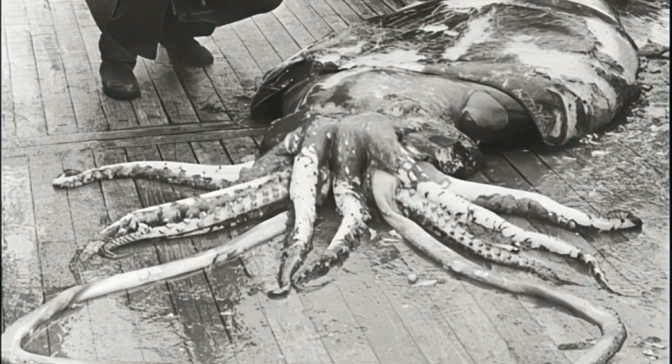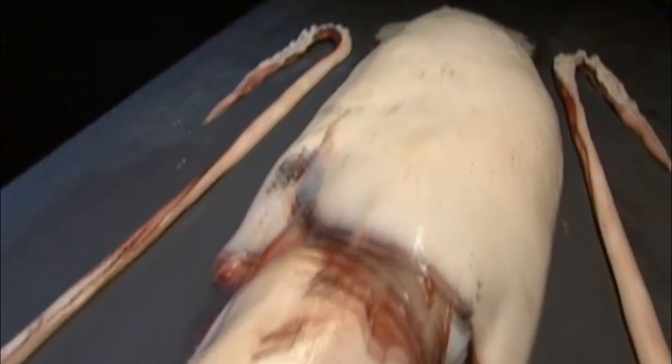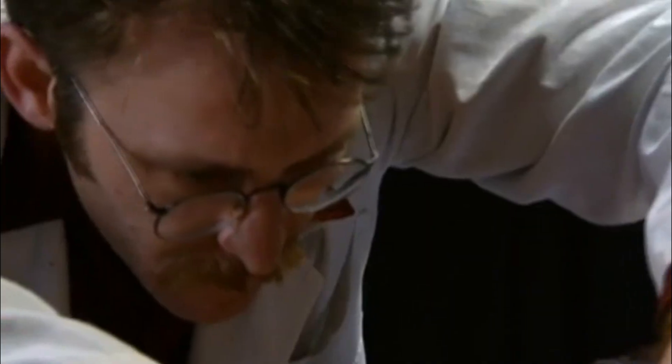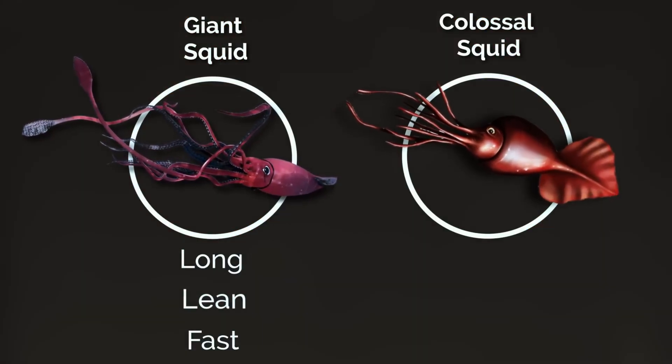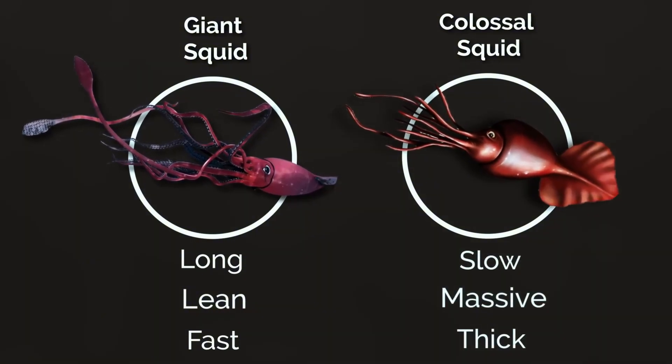In the frozen darkness of the southern ocean, it is the perfect ambush predator. If the giant squid and the colossal squid ever faced off, the outcome would be impossible to predict. The giant is faster, more flexible. The colossal heavier, thicker skinned and armed with spinning hooks instead of simple suckers.